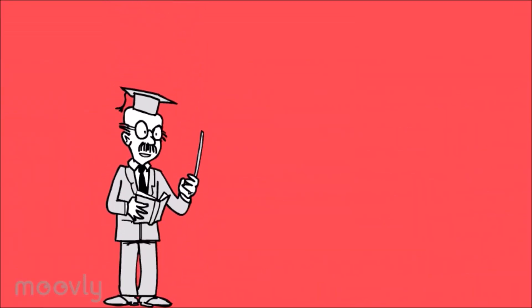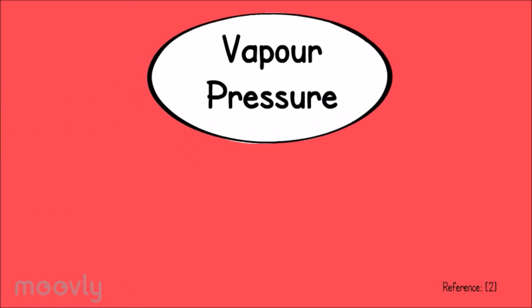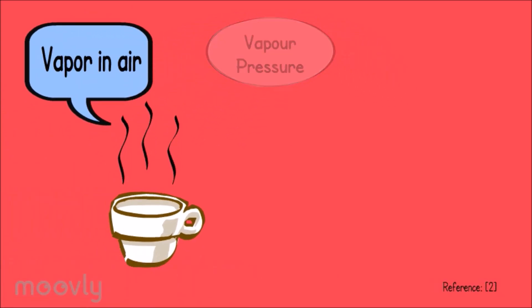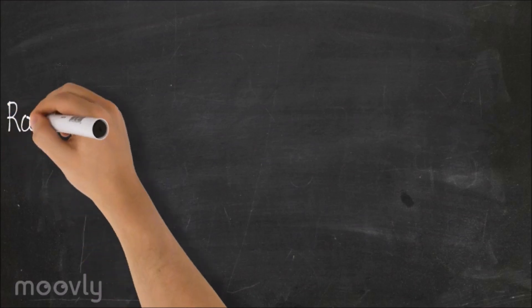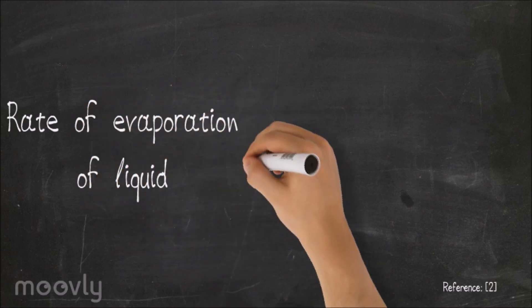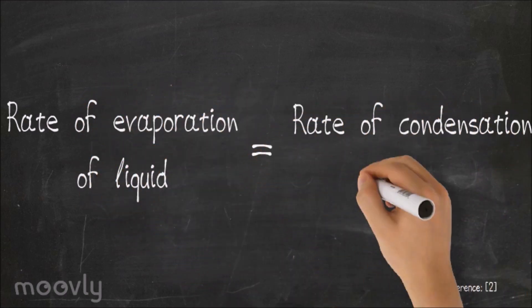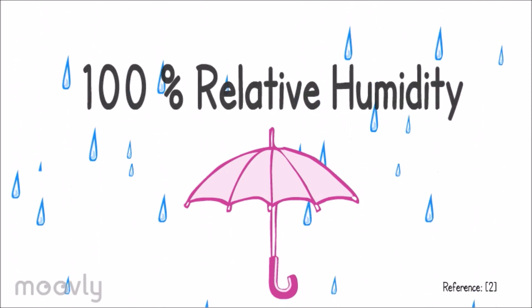For both dew point and wet bulb temperature, the vapor pressure of vapor in air is same as the vapor pressure of water. Rate of evaporation of liquid is equal to the rate of condensation of vapor, and also 100% relative humidity.